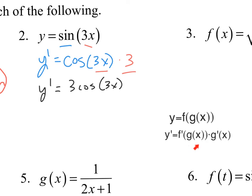Referencing the rule from above: the outside function is sine of x, the inside function is 3x. We do f prime, which is cosine, leave g of x alone, and then multiply by g prime, which is 3.